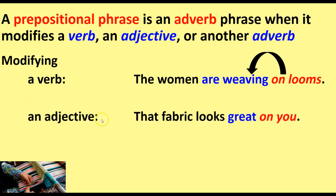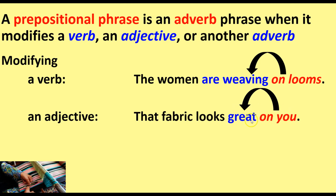Modifying an adjective: 'That fabric looks great on you.' On you is our prepositional phrase, modifying the adjective 'great.' Great is describing fabric — the fabric looks great — and on you tells us the extent to which it looks great. So it's modifying our adjective, making the phrase itself act as an adverb.